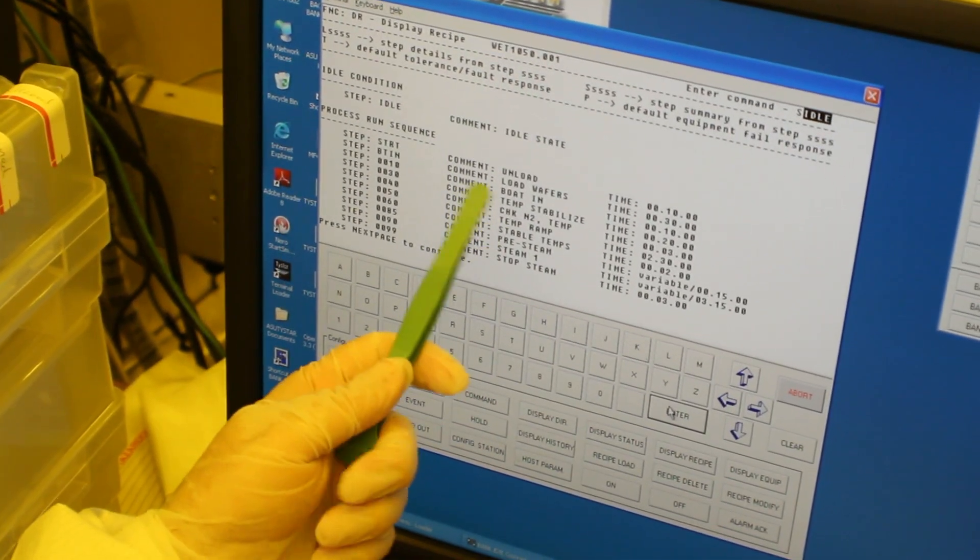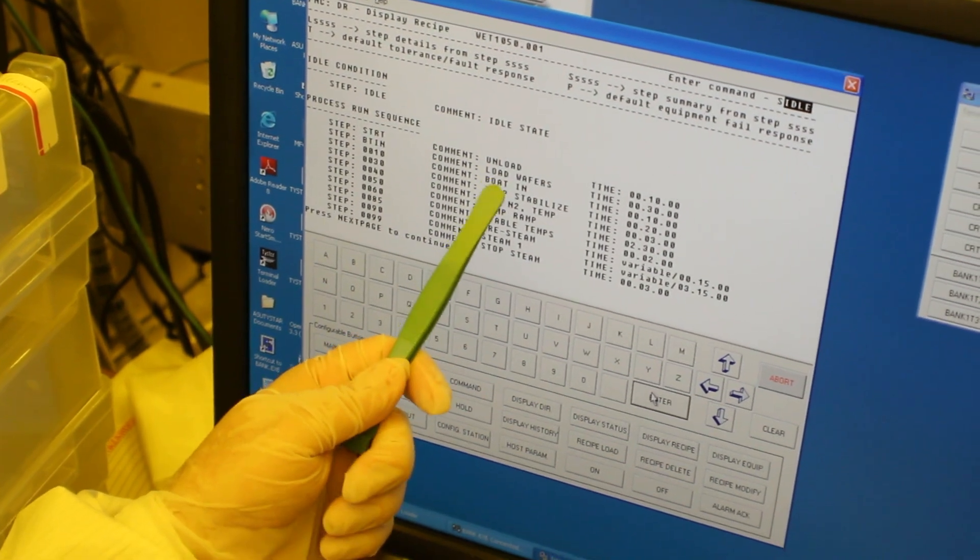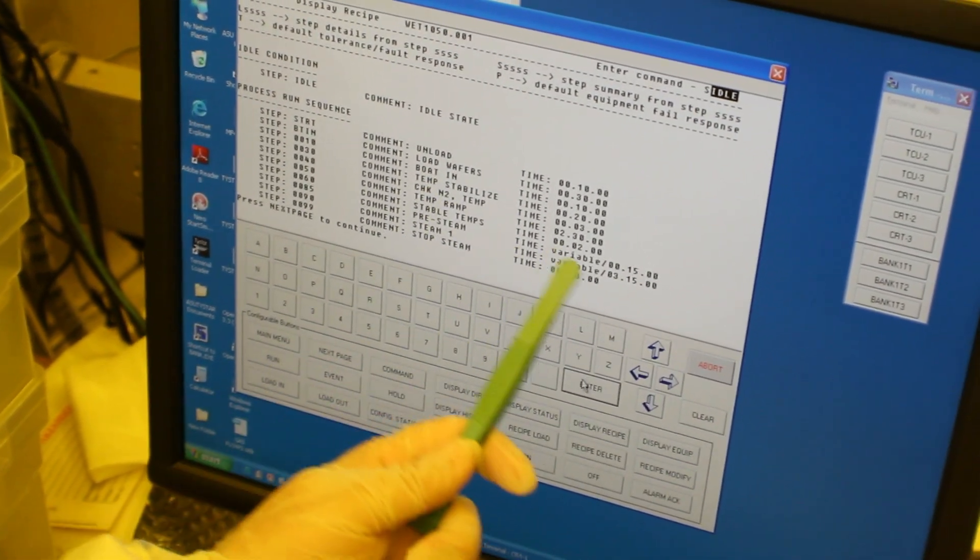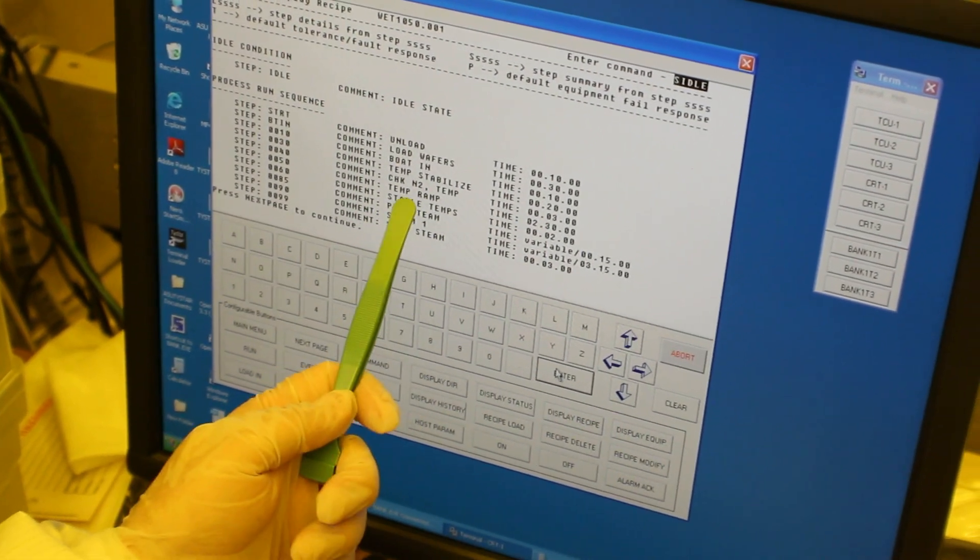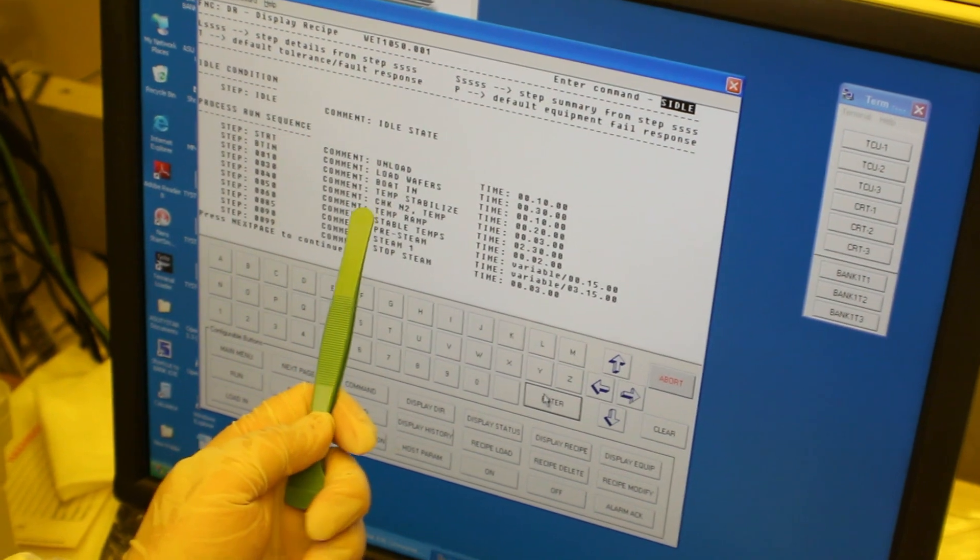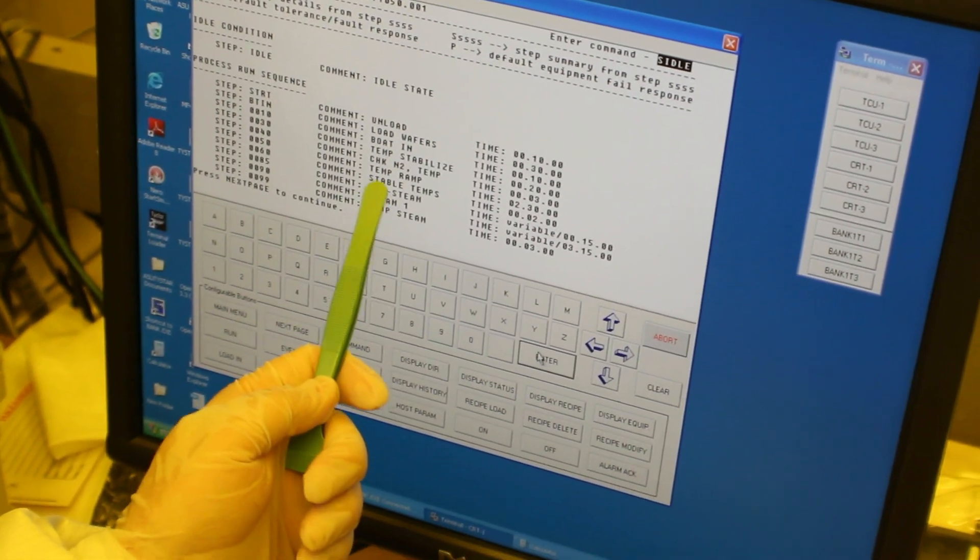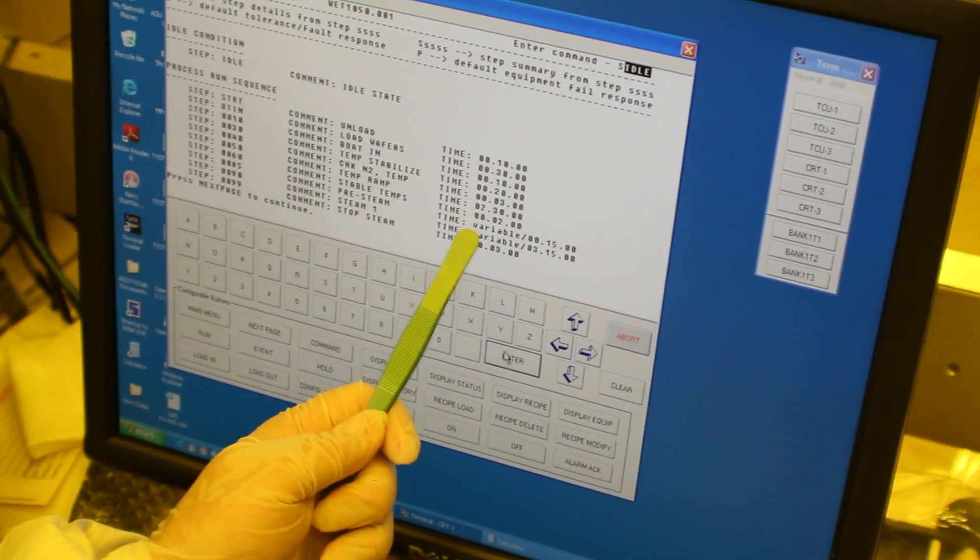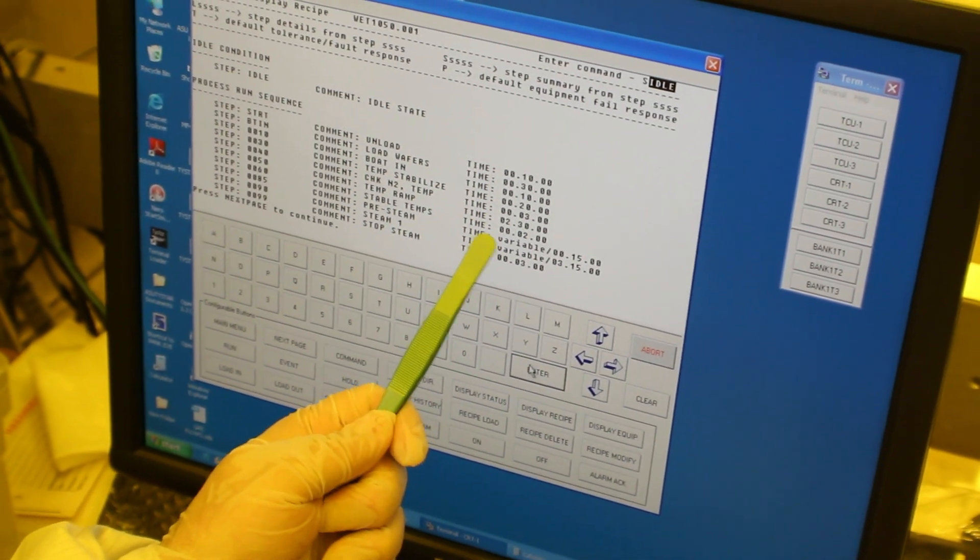So here's an example of our recipe. We have unload the boat and we're going to load the wafers, then boat in temp stabilize, and then we're going to ramp. This is temp ramp. It takes two and a half hours, going to ramp that up to 1050 degrees Celsius. We do it over a two and a half hour period to slowly increase so we don't cause any thermal stress on the silicon wafers.